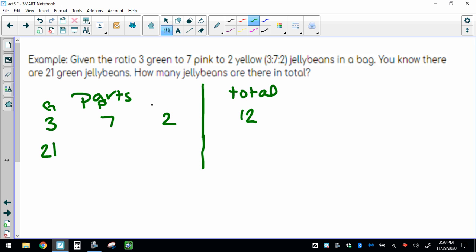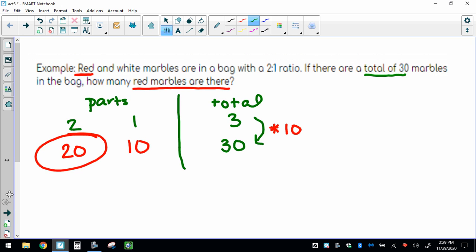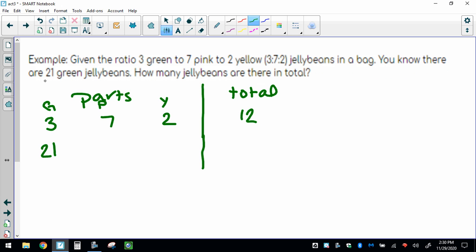Green, pink, yellow. So make sure that you line things up where it was. In this one, it gave us a total of 30, so I put it in the total column here. With 21 green, I need to put it in the green column.